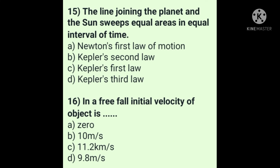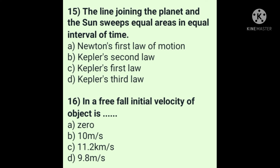Question 15: The line joining the planet and the sun sweeps equal areas in equal intervals of time. Answer is option B: Kepler's second law. Question 16: In a free fall, initial velocity of the object is — answer is option A: zero.